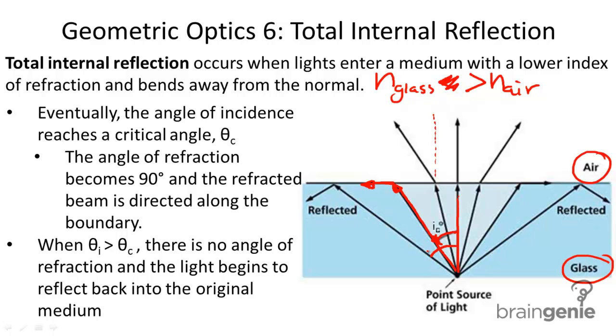Now we have this angle, which is greater than the critical angle. When this is the case, you see light no longer refracts. It reflects internally.